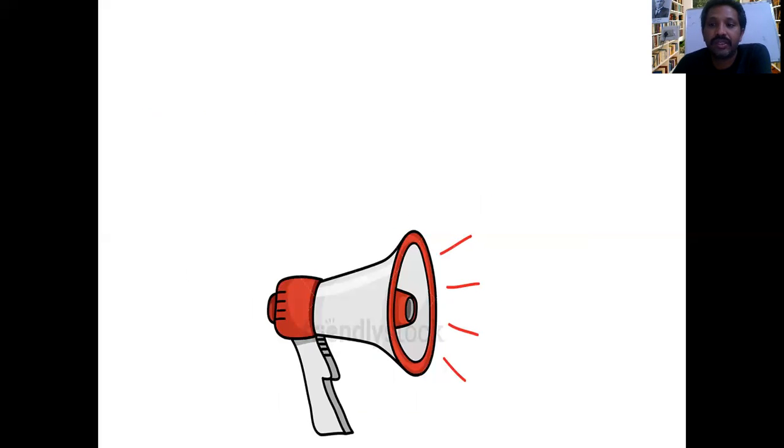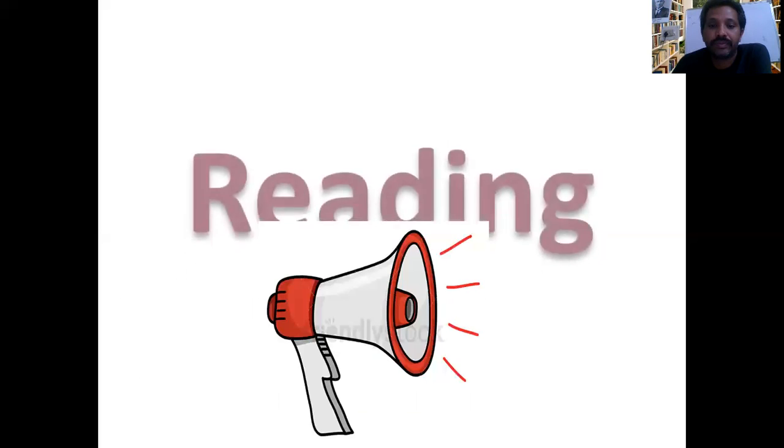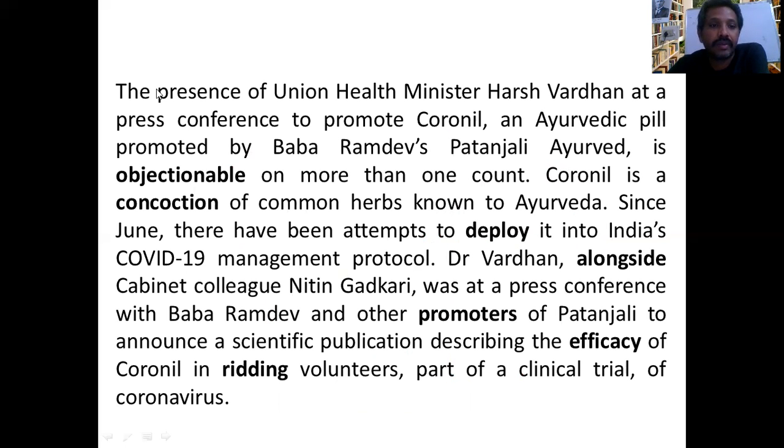The presence of Union Health Minister Harsh Vardhan at a press conference to promote Coronil, an Ayurvedic pill promoted by Baba Ramdev Patanjali Ayurveda, is objectionable on more than one count. Coronil is a concoction of common herbs known to Ayurveda. Since June, there have been attempts to deploy it into India's COVID-19 management protocol.